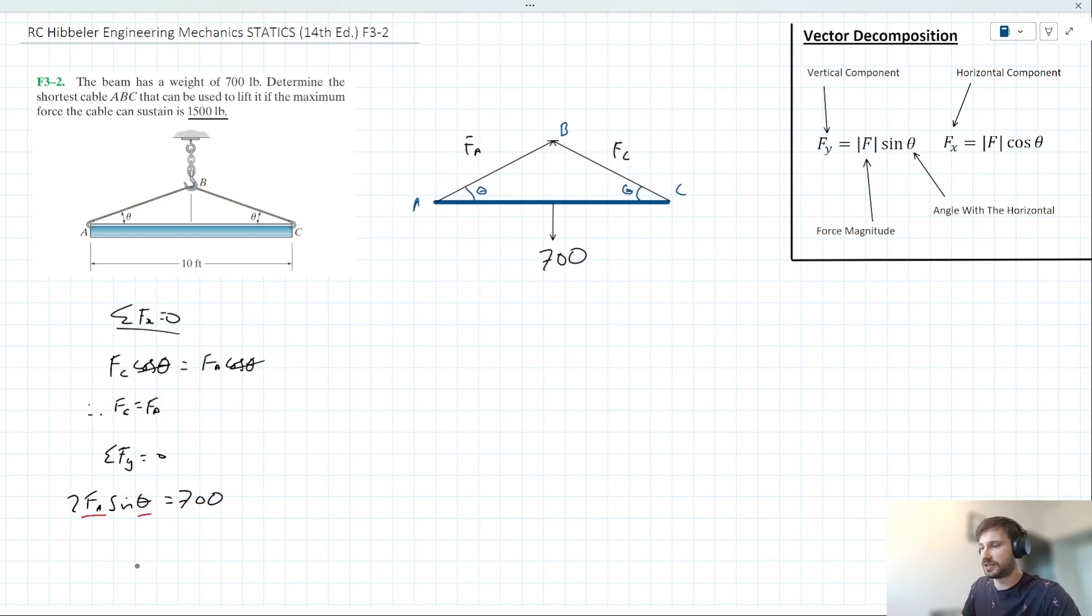Or in other words, mathematically, we can say FA is less than or equal to 1,500 pounds. And we could take that idea and substitute it in for FA in our equation here.